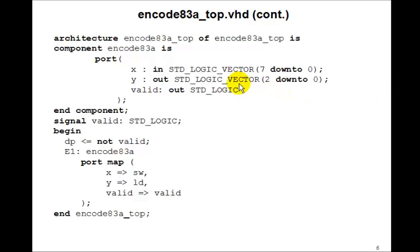So here's the architecture, the component encode83. And then we'll have a valid signal, and then the decimal point will be set to not valid. And then when we port map this, X goes to switch, Y goes to LD, and valid goes to valid.